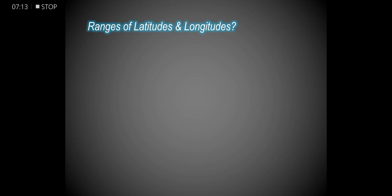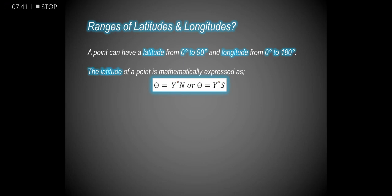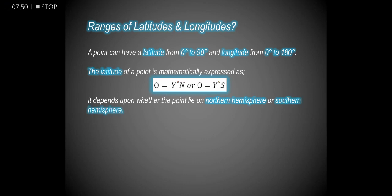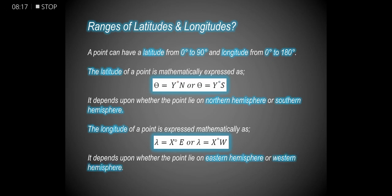A point can have a latitude from 0° to 90° and a longitude from 0° to 180°. The latitude of a point is mathematically expressed as θ = y° North or θ = y° South, depending on whether the point lies in the Northern or Southern Hemisphere. The longitude of a point is expressed as λ = x° East or λ = x° West, depending on whether the point lies in the Eastern or Western Hemisphere.